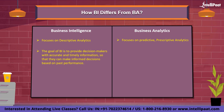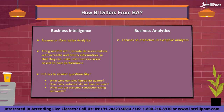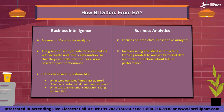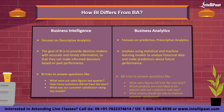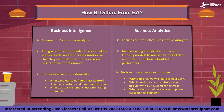The goal of BI is to provide decision makers with accurate and timely information so they can make informed decisions based on past performance. BI tools are typically used to answer questions like: what were our sales figures last quarter? How many customers did we have last year? What was our customer satisfaction rating last month? Business analytics, on the other hand, focuses on predictive and prescriptive analysis — using statistical models to forecast future performance, and machine learning algorithms to identify the best course of action. BA tools answer questions like: what will our sales look like next quarter, which products are most likely to be popular with our customers next year, and what actions should we take to improve customer satisfaction?